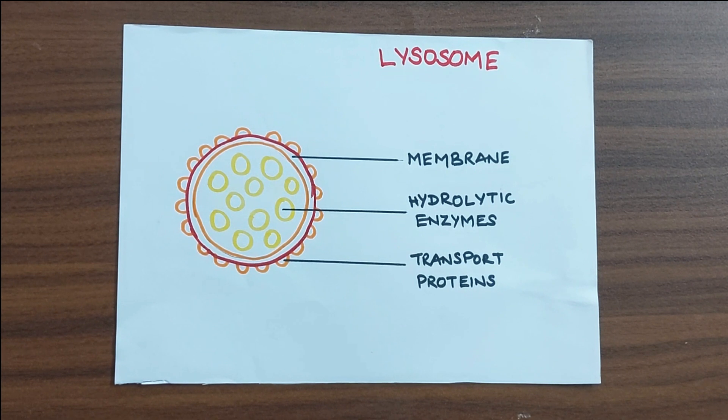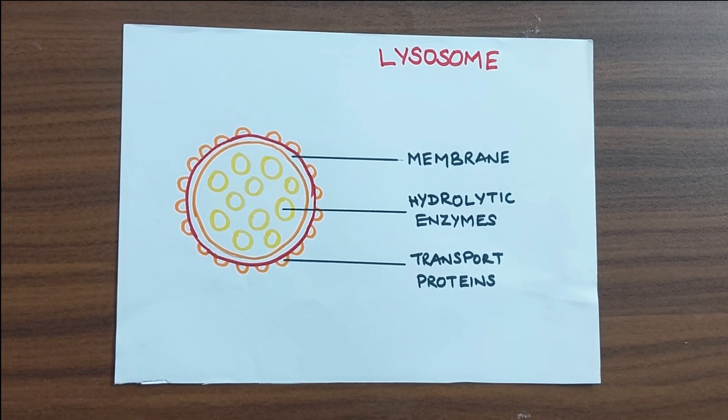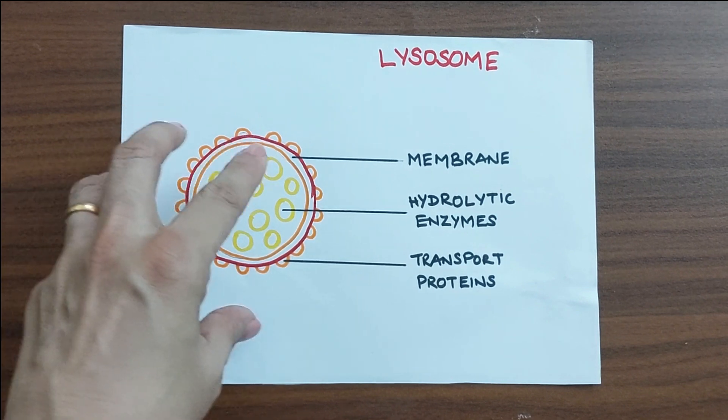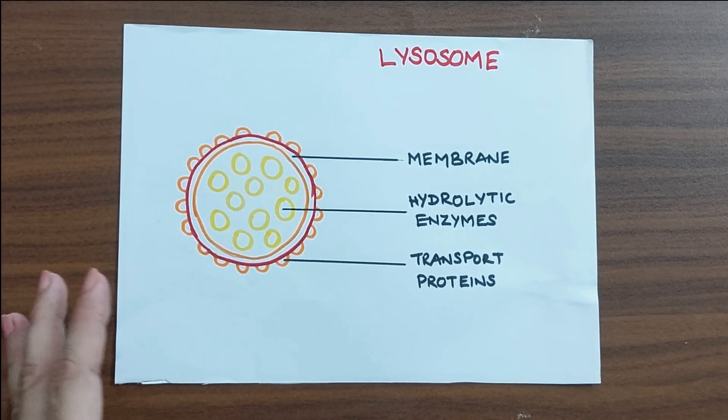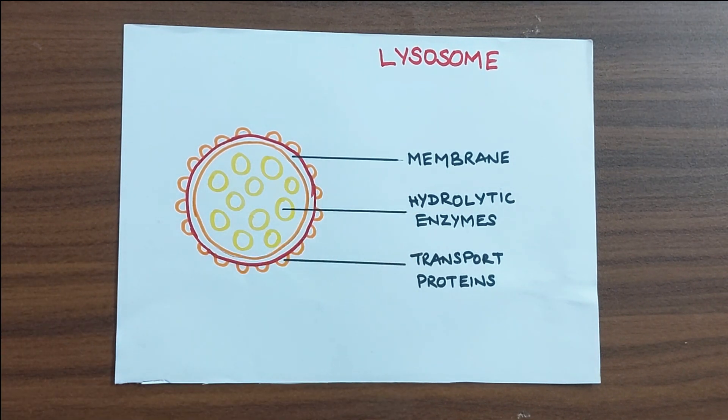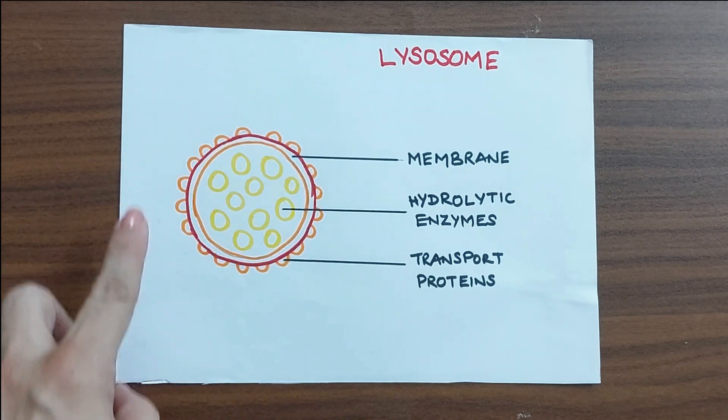Let us see the lysosomes. These are interesting organelles. They are also known as suicide bags. Sounds a little creepy. But yes, these are sacs or vesicle structures which contain very powerful digestive enzymes. These are the hydrolytic enzymes and the structure is very simple. It is bounded by a membrane.